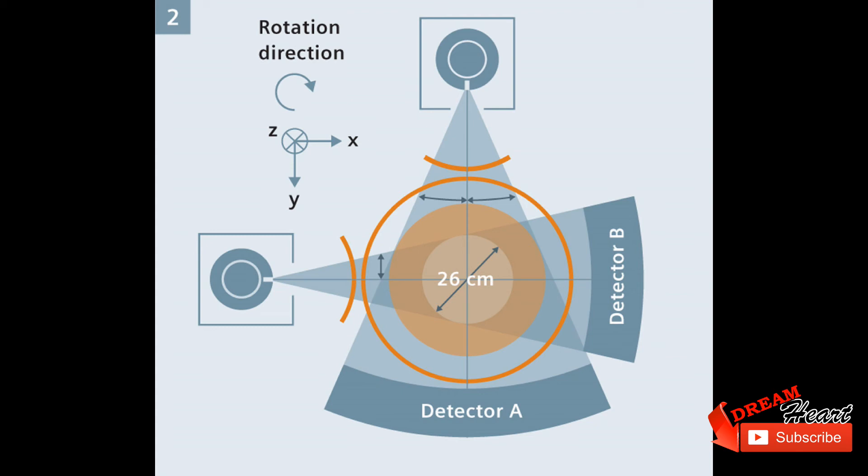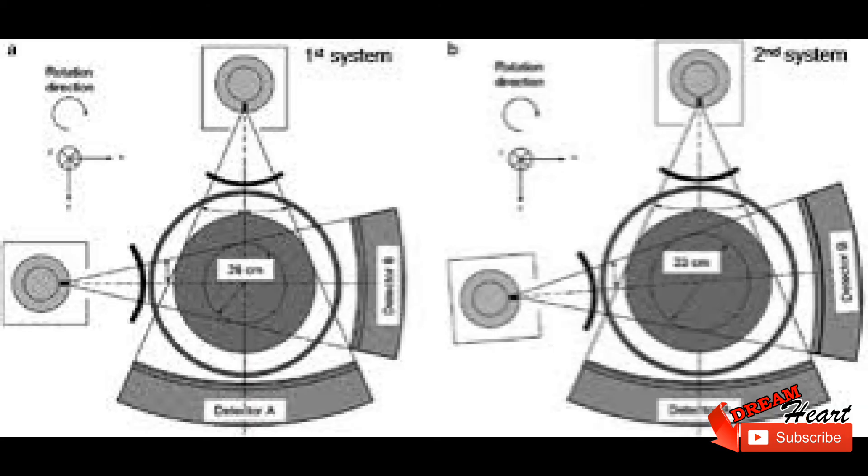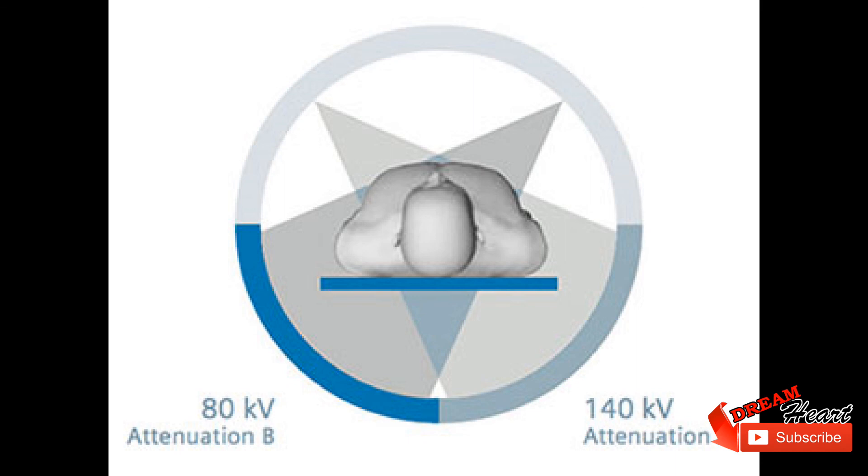Siemens introduced a CT model with dual x-ray tube and dual array of 64 slice detectors at the 2005 Radiological Society of North America RSNA medical meeting. Dual sources increase the temporal resolution by reducing the rotation angle required to acquire a complete image.